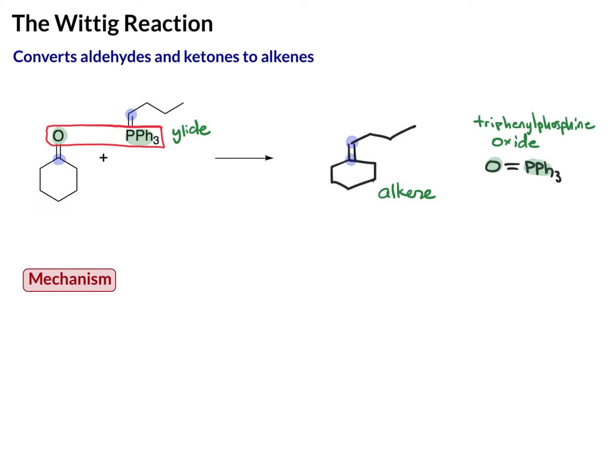If you're going to do it, just draw your aldehyde or ketone. Then flip your ylide such that the phosphorus and the oxygen are aligned, and the carbon of the ylide is pointing away from the ketone. Then you can circle those fragments to get the triphenylphosphine oxide, and the two carbons bond together to give you the alkene.